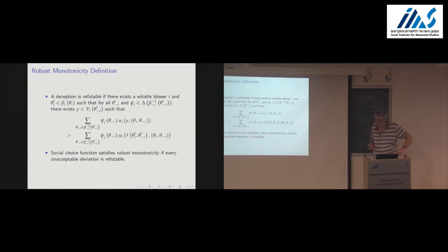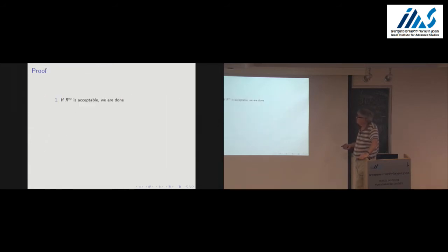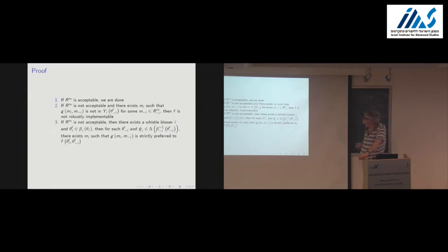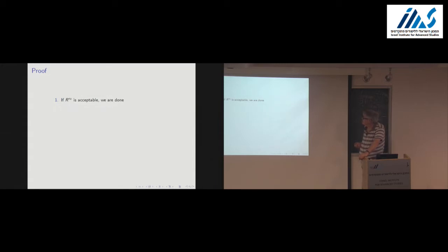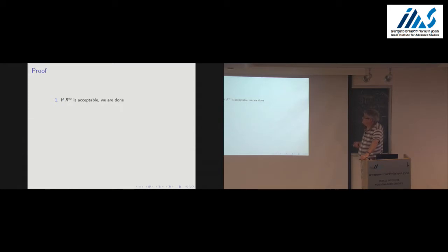R-infinity is the set of rationalizable actions indexed by the set of types — it is a set of messages in a mechanism. The acceptability and refutability are defined in terms of the deception profile. The ri should be indexed by theta, making it the same type of object as the deception.